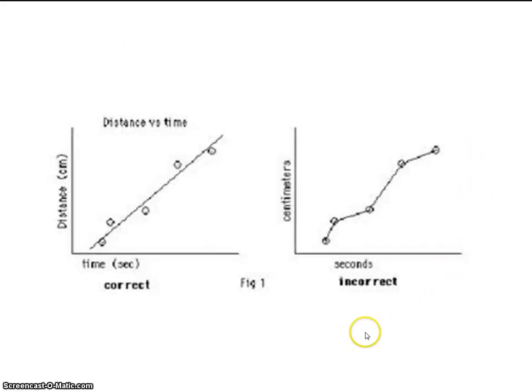What about these two graphs? Compare the two of these. Of course, this one's missing a title, but what else? Well, this one has a label and a unit, where this graph here only has units. Same thing on the y-axis. We have distance and centimeters, but here it just says centimeters.